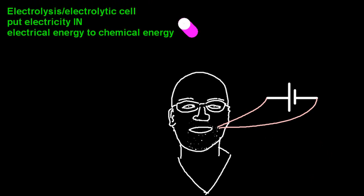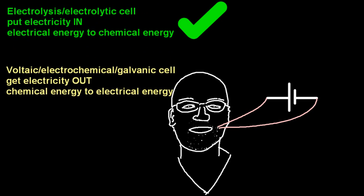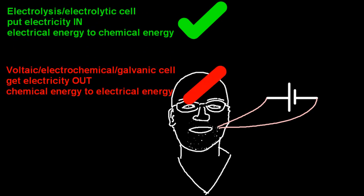So electrolysis, you're putting electricity in, you're turning electrical to chemical energy. That's what this video is about. But it's very easy to get this confused with the voltaic cell, electrochemical galvanic cell, same thing. That's where you get electricity out, turning chemical to electrical energy.